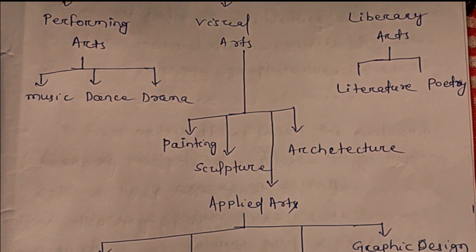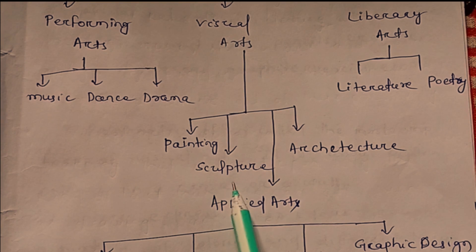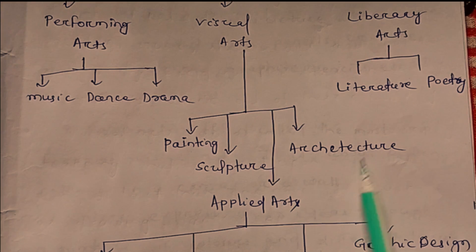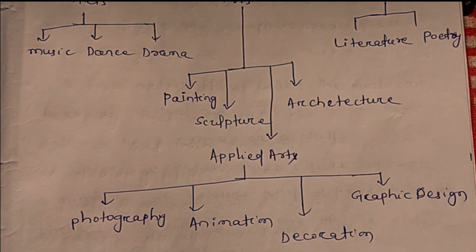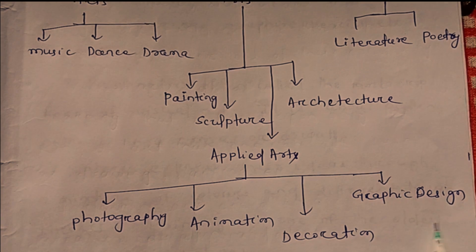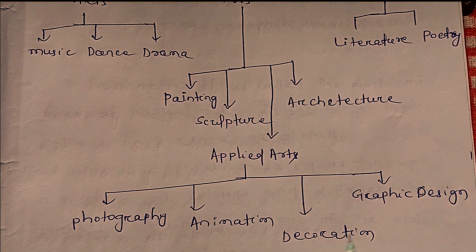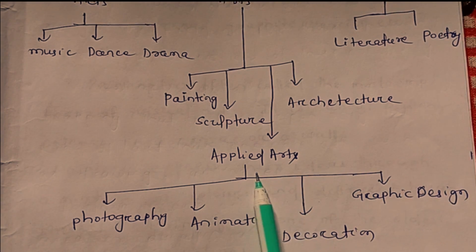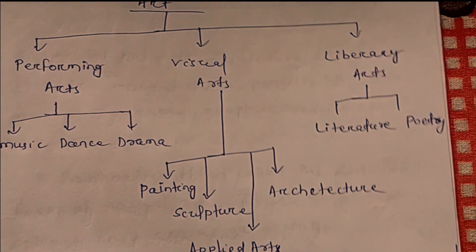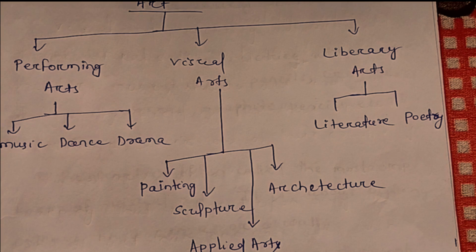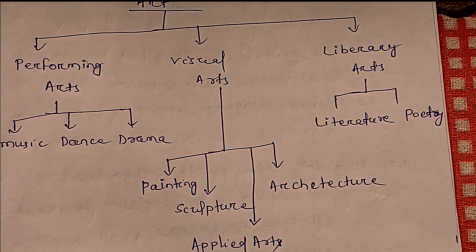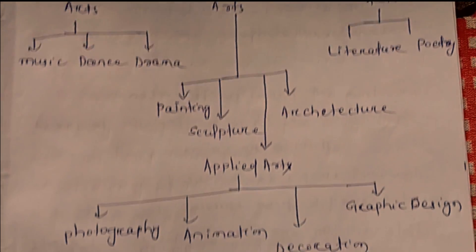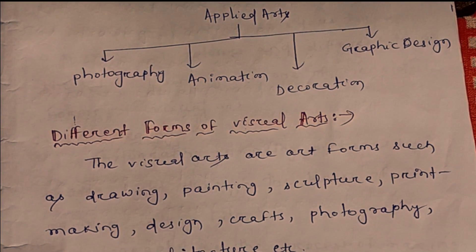Visual arts include painting. Applied arts include architecture, photography, animation, decoration, and graphic design. There is also literature and poetry as different forms of visual arts.